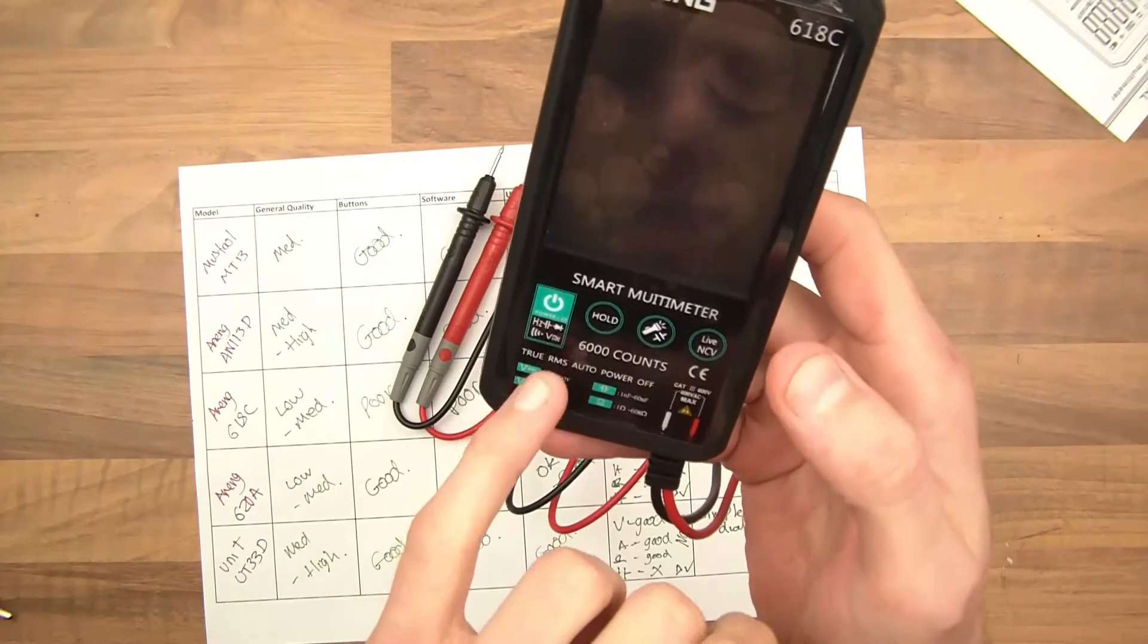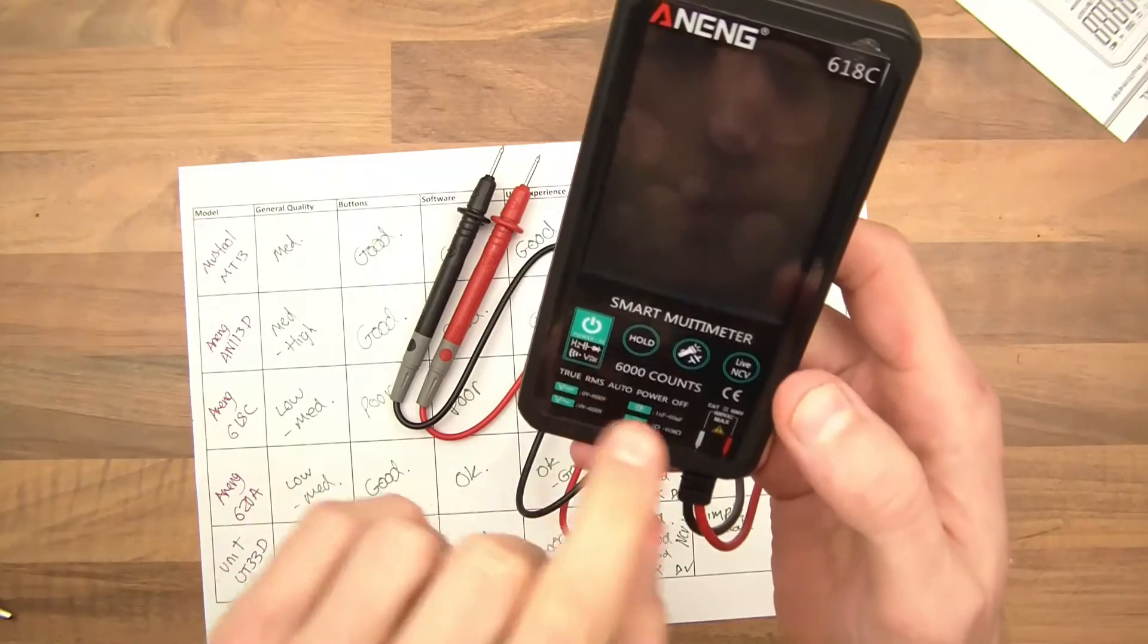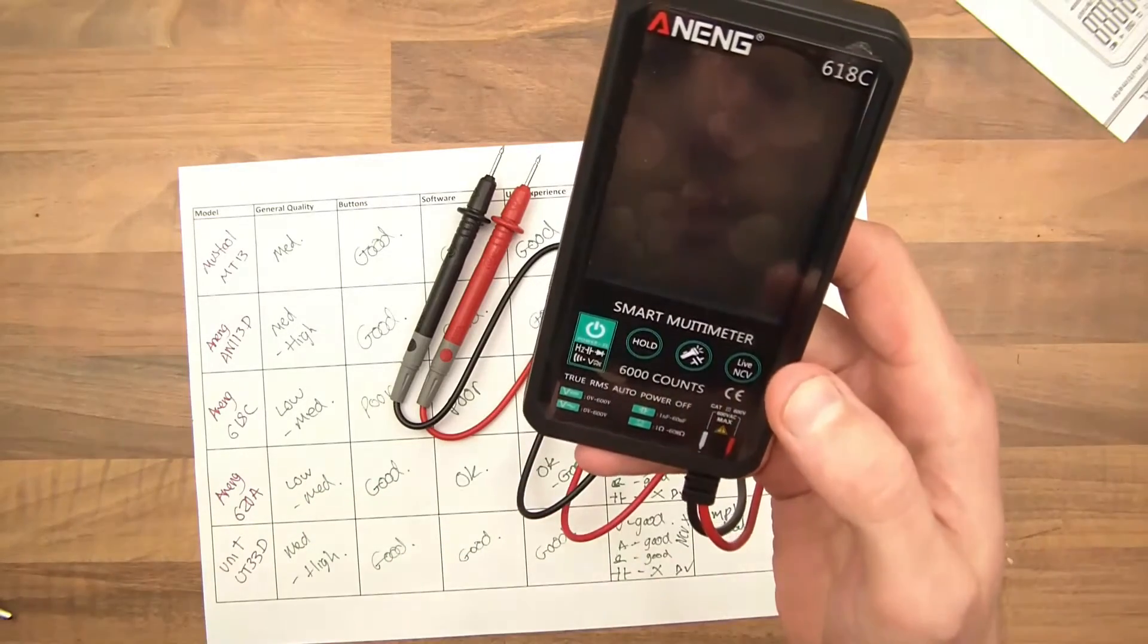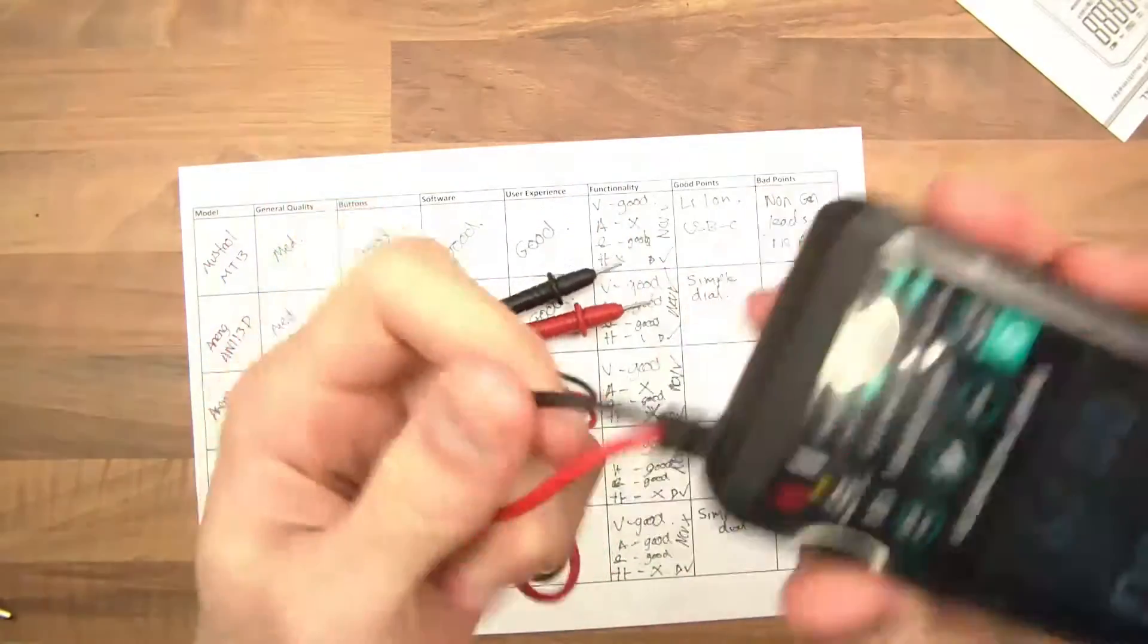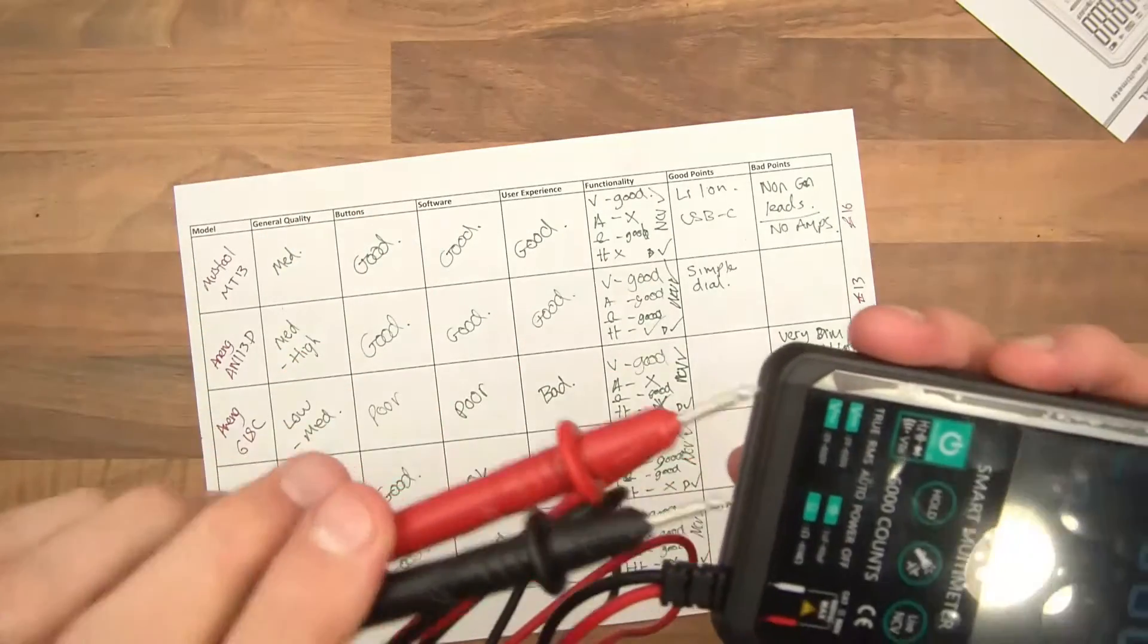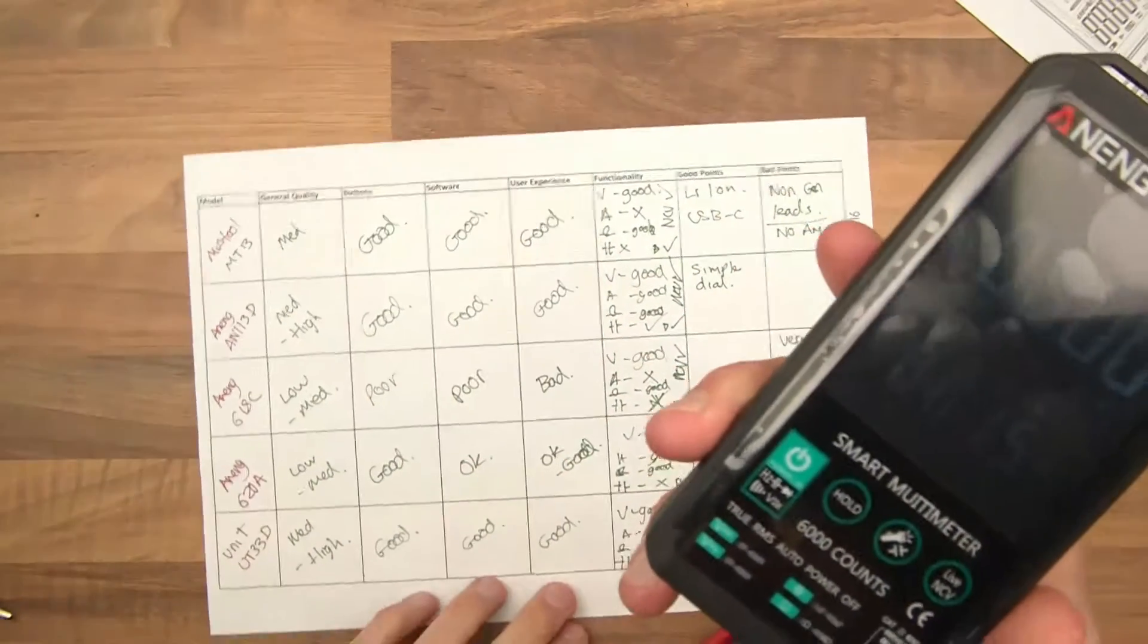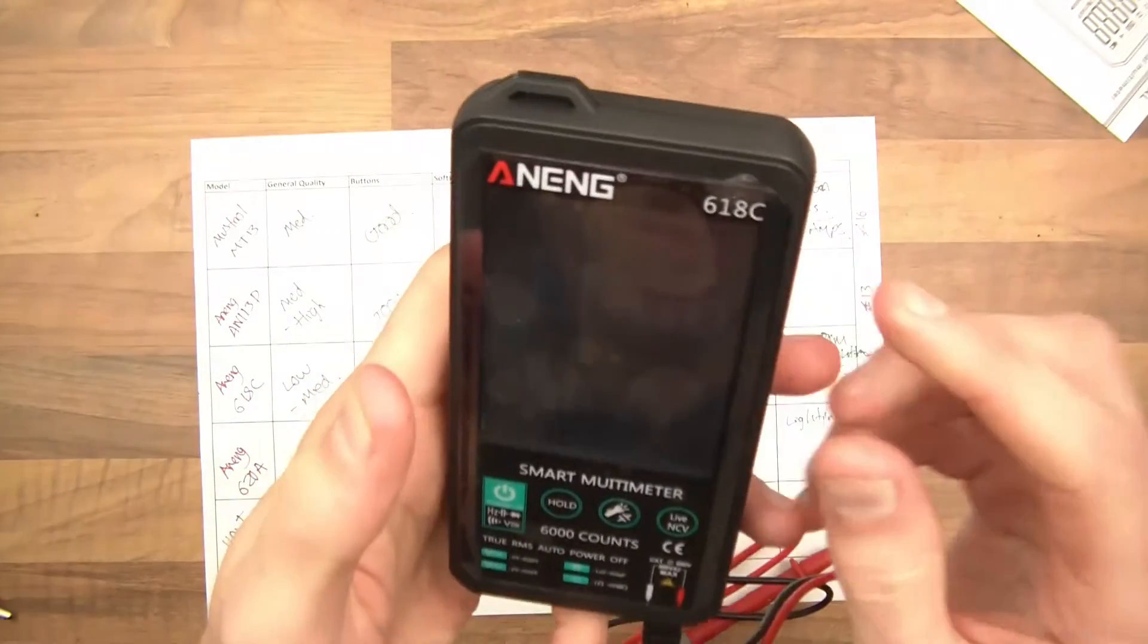The menus don't make any sense. When you go through, there's capacitance on here, but they don't go in that order. There's also capacitance there. Sometimes the buttons don't work fully. The leads are not changeable, so when you damage the leads, then what? They're not particularly good quality leads either.